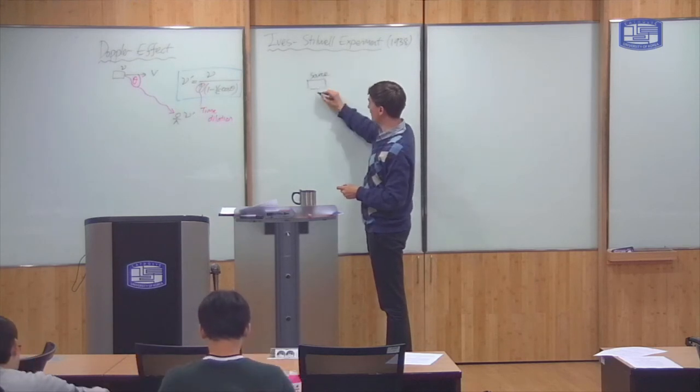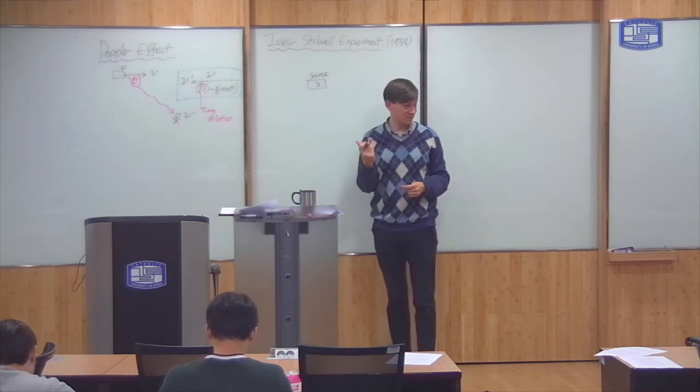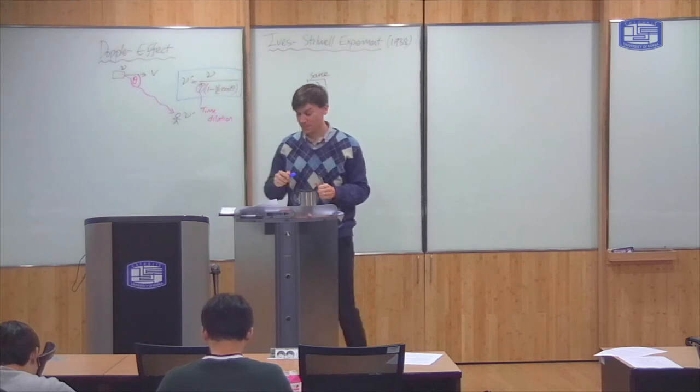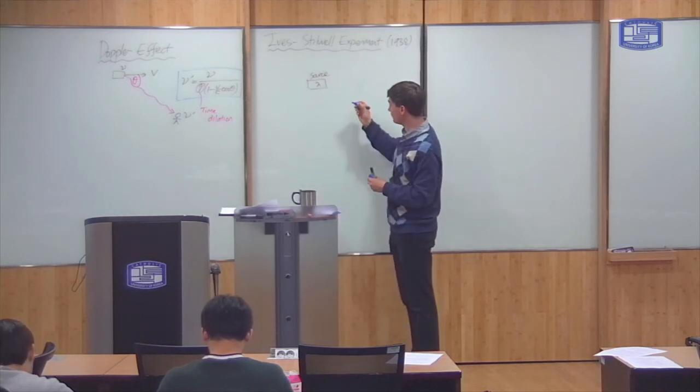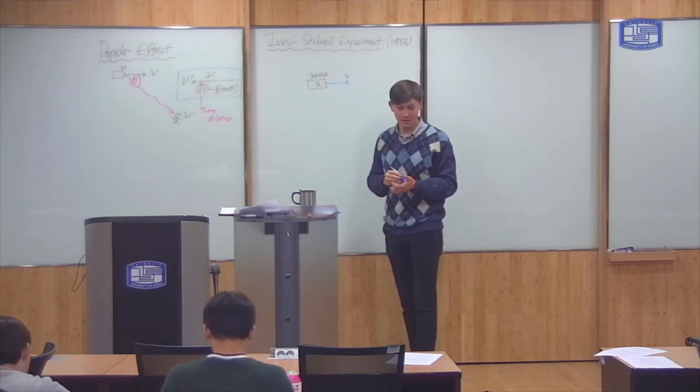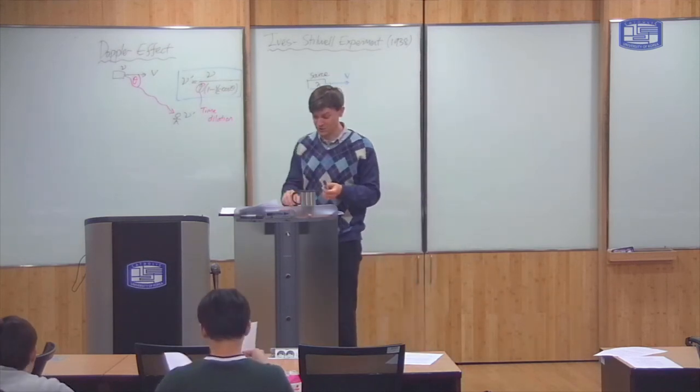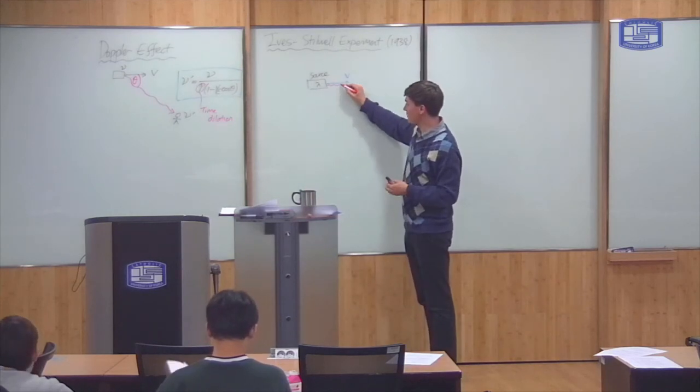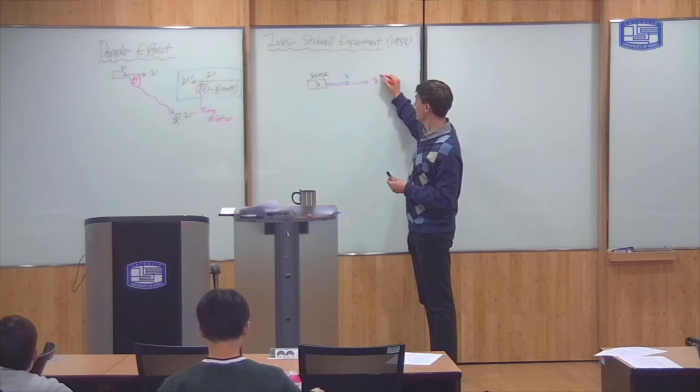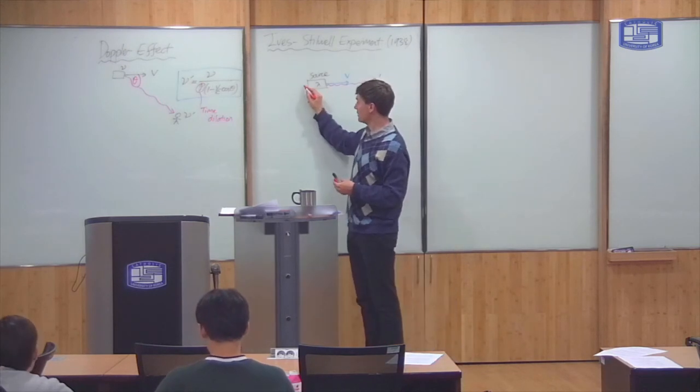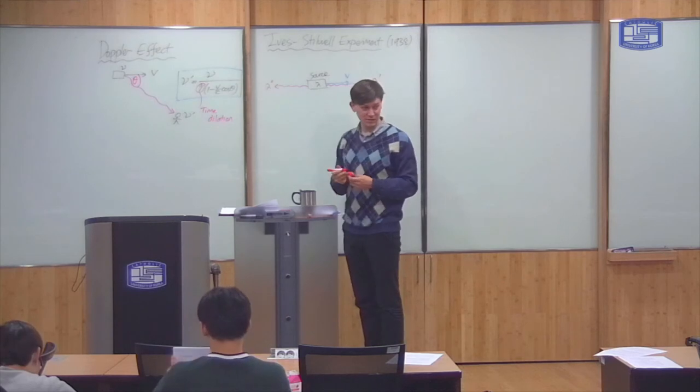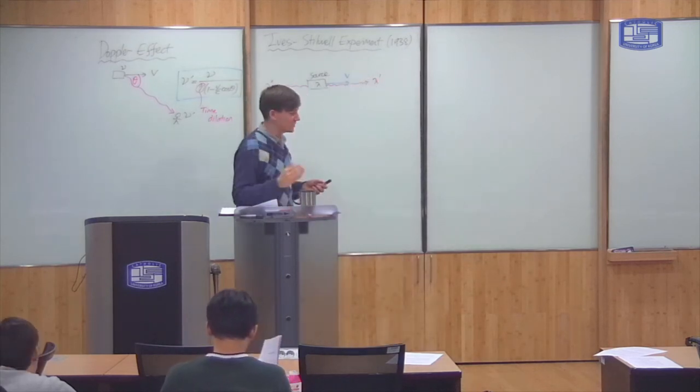which is emitting at a particular wavelength lambda. I'll use wavelength, you'll see why in a minute. And the source is moving this way with a high speed b. And what you do is you measure the wavelength of light emitted in this direction, lambda prime, and frequency of light emitted in this direction, lambda double prime. You see what you get.